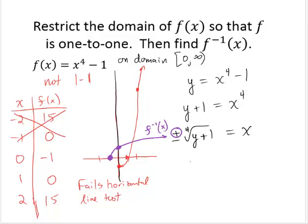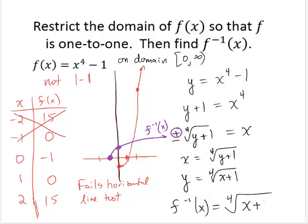So I'll write that x equals the positive fourth root of y plus 1. We invert the variables: y equals the positive fourth root of x plus 1. And use the appropriate inverse notation. f inverse of x equals the fourth root of x plus 1. And then notice that the domain of this function is negative 1 to infinity.